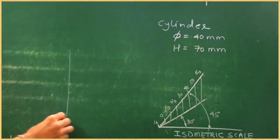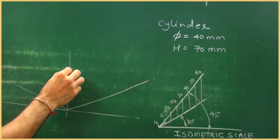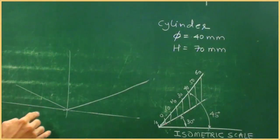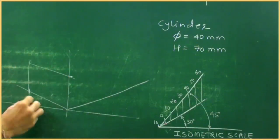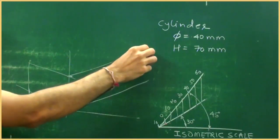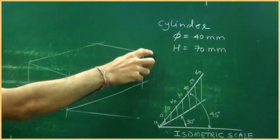then we will start with box, how much is the diameter 40, so we will take 40, 40 on both the sides, so this will be the box and this is axis length which is 70